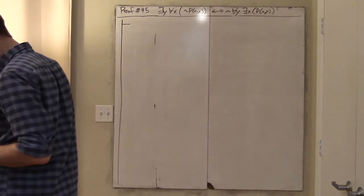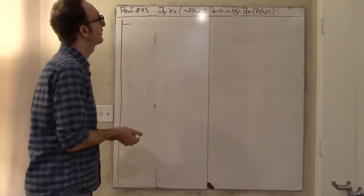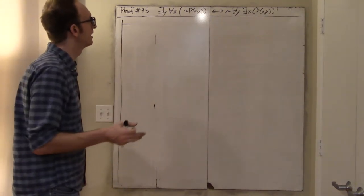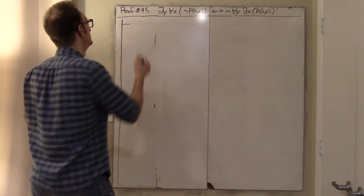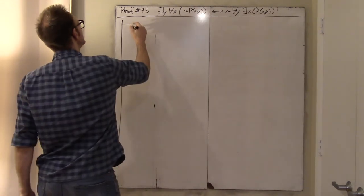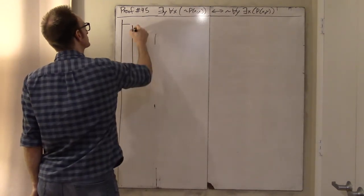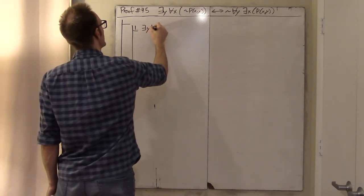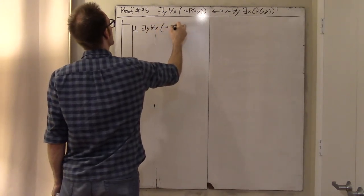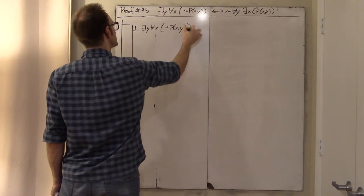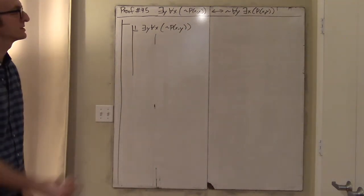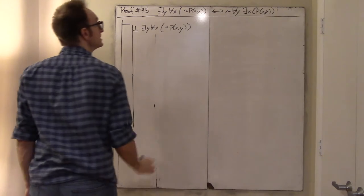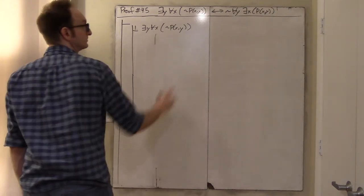Going from left to right is easier. Starting in line one: there exists a y such that for all x, not p of x, y. And I want — down there — this thing: not for all y, there exists an x, p of x, y. The straightforward way to do this is by contradiction — it's a negation, so that's the obvious step.